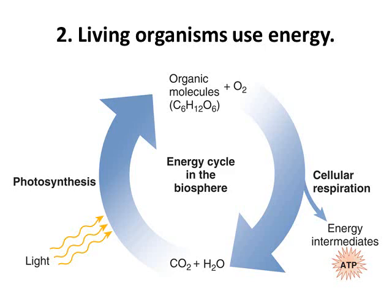Our second characteristic of life is that living organisms use energy. On this slide we have the energy cycle in the biosphere. In the biosphere, we take carbon dioxide (CO2) and water (H2O), and to those two molecules we add sunlight. These three reactants go through a process called photosynthesis, which converts light, carbon dioxide, and water into food and oxygen. The food is a type of organic molecule — we'll focus on sugar or glucose during most of this course.